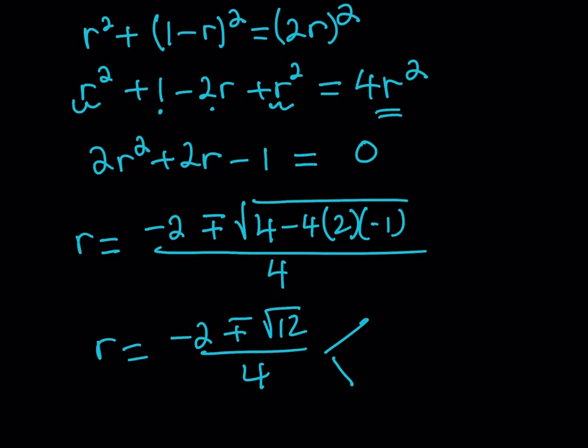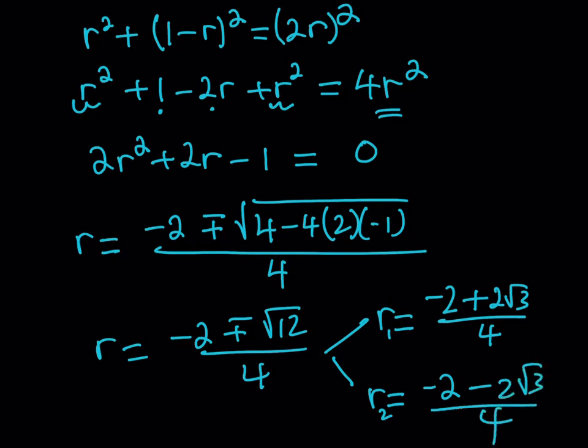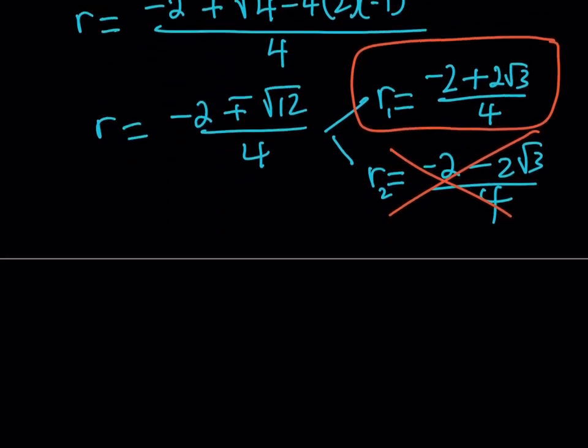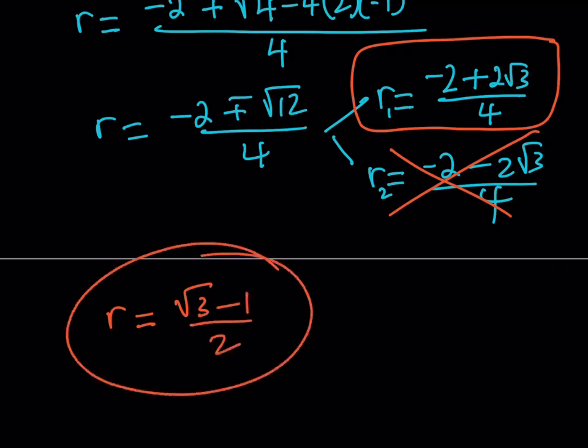So r is going to equal negative 2 plus minus the square root of 12 plus 4. This is going to split into two solutions. One of them is going to be negative 2 plus and square root of 12 can be written as 2 root 3 and then just divide by 4. And the other solution, negative 2 minus 2 root 3 over 4. Obviously, the second solution r2 is a negative value. So we're not going to be able to accept that. So we're going to go with this. From here, the r value is found to be square root of 3 minus 1 over 2.